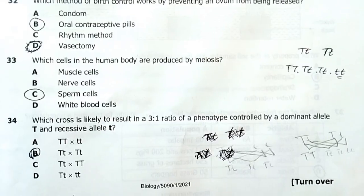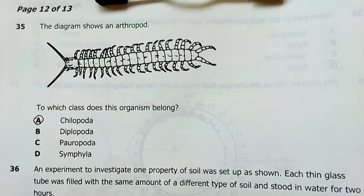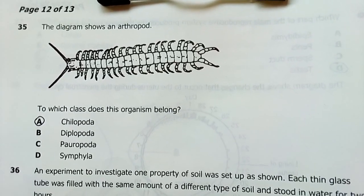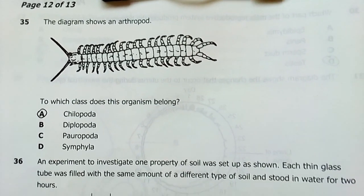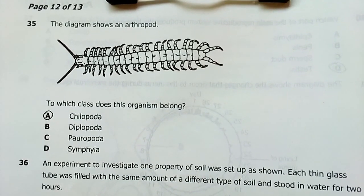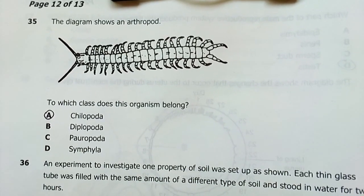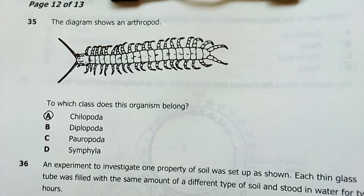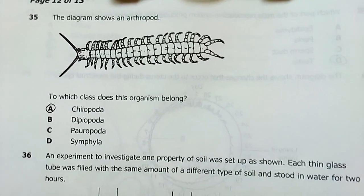We'll go to 35. Question 35. Diagram shows an arthropod. This looks like a centipede. These guys come from the same group as the millipedes, centipedes. So to which class does this organism belong? I had to scratch my head on this one. But finally, I discovered it's actually a chilopoda. It comes from the class of chilopoda. This is taxonomy.